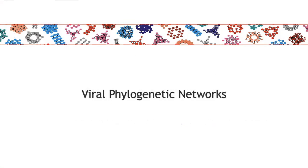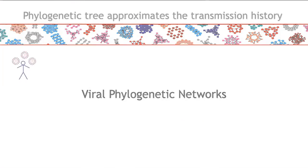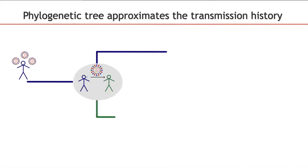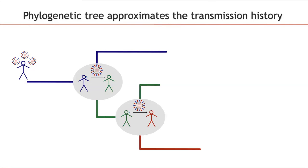First, I would like to introduce you to the concept of viral phylogenetic networks in the context of reassortment. Here we see a blue infected host. Going forward in time, they come into contact and infect the green person, who subsequently infects the red person. Then, we can obtain viral sequences from all these individuals.